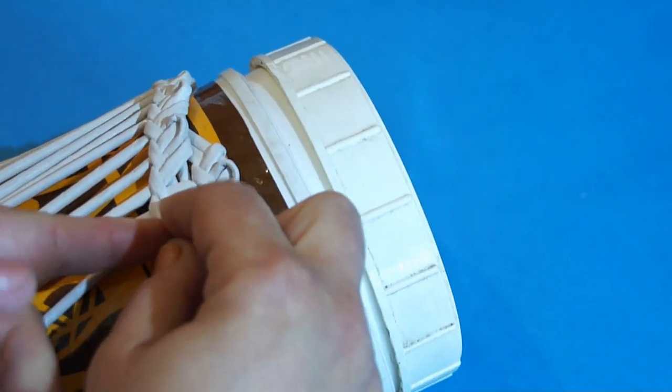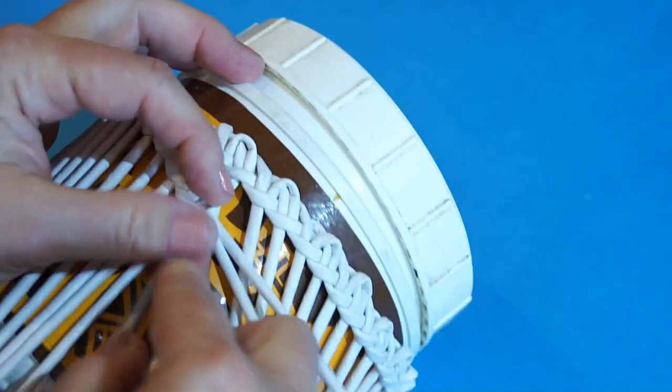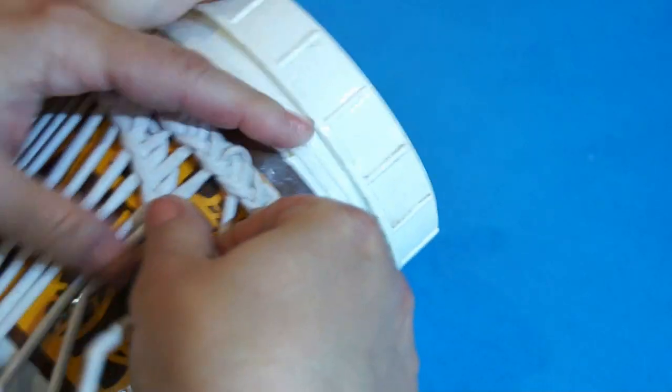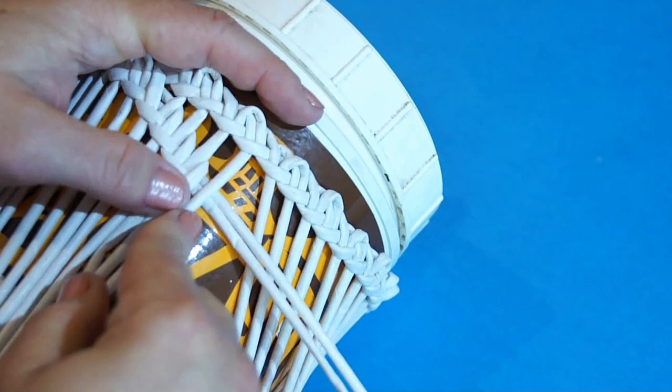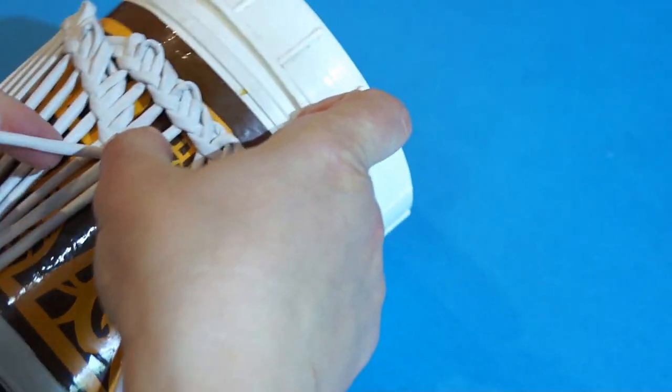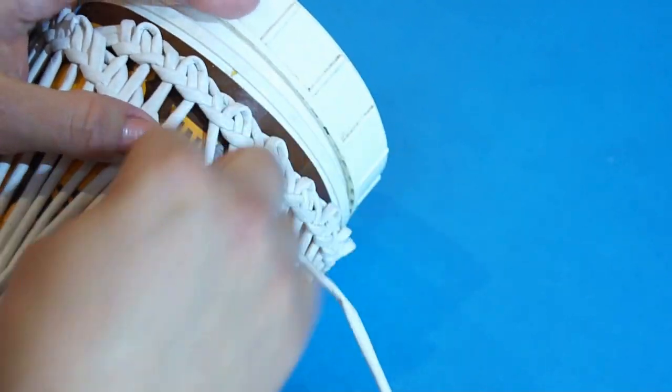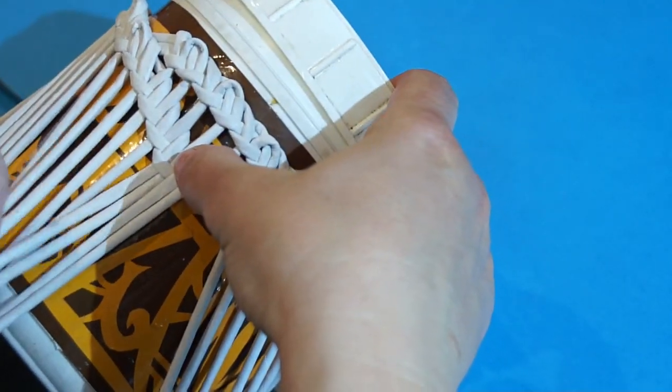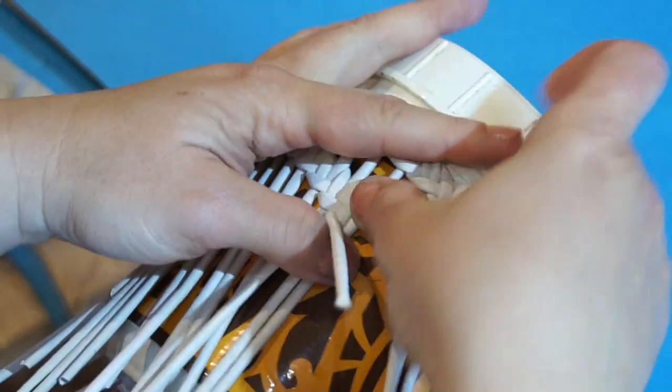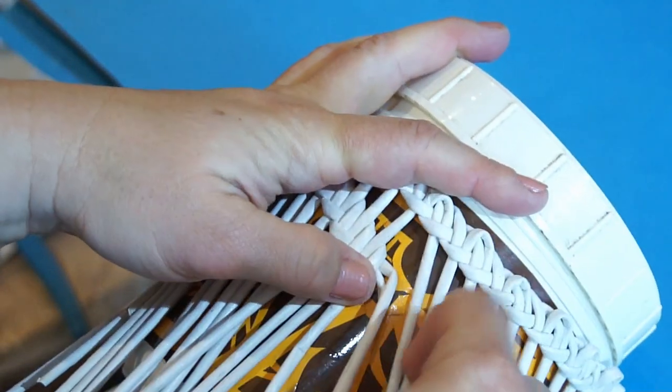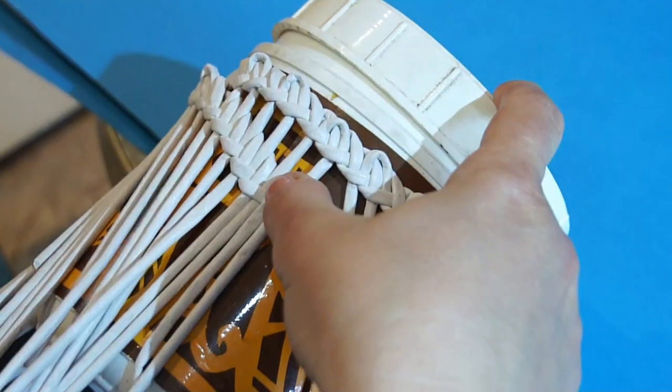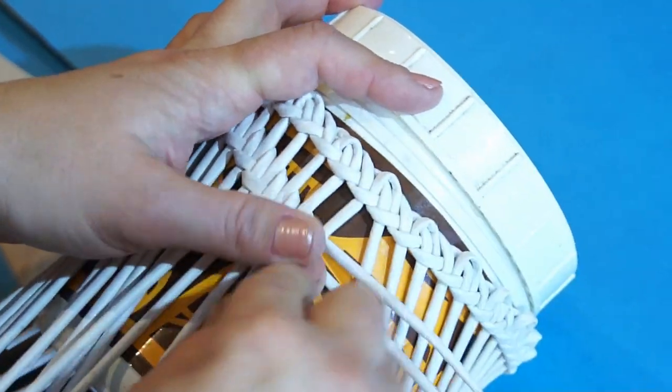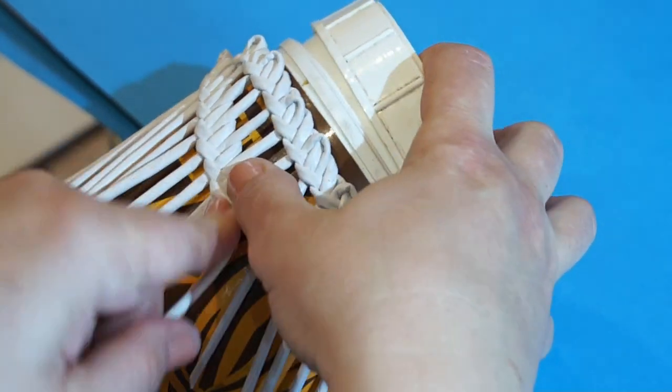In this case, I weave with no additional poles. I just use the poles of the previous row for the current row. You adjust the row height yourself. Continue weaving spirally up to the required height.